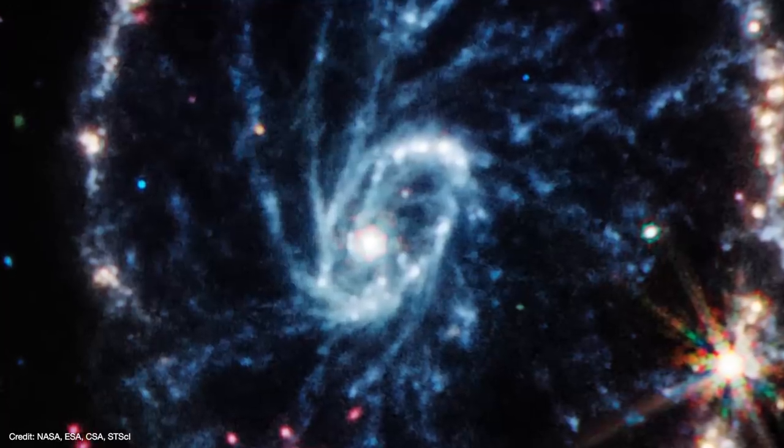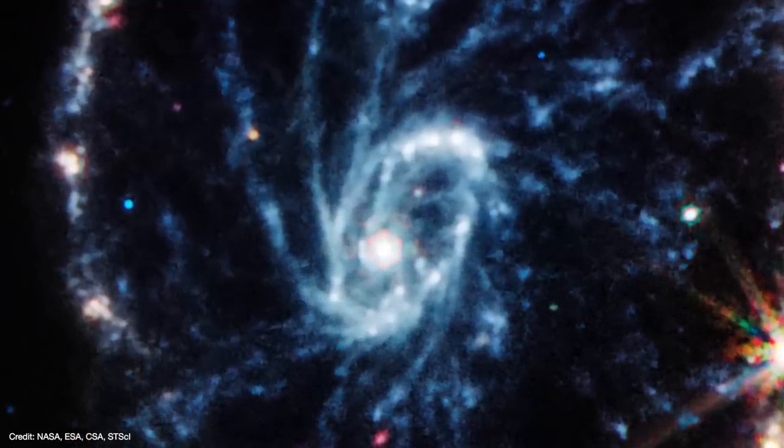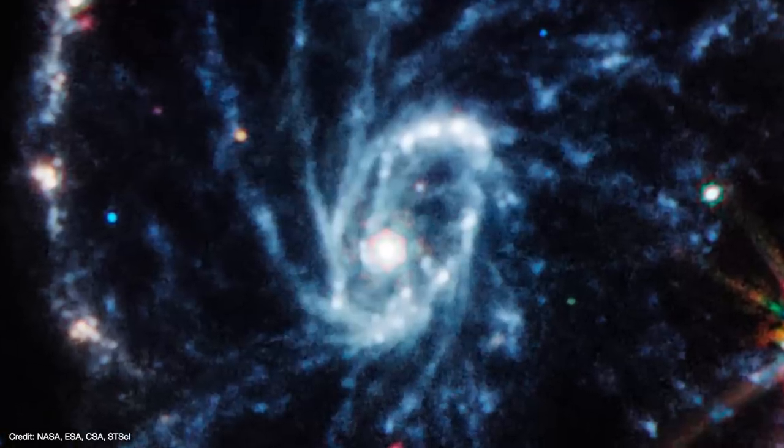Meanwhile, back in the core, MIRI reveals that the inner ring seems to be connected to the nucleus by another set of spokes. So it's kind of like a cartwheel within a cartwheel.